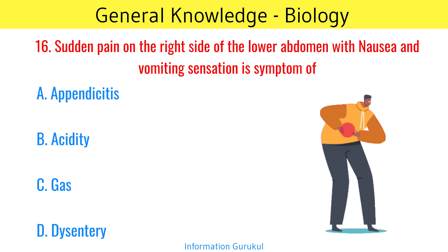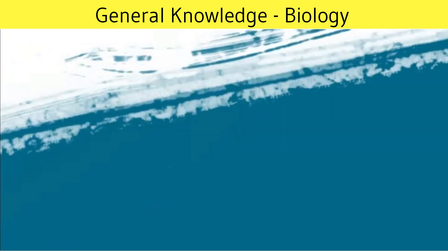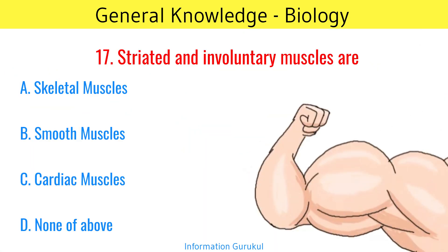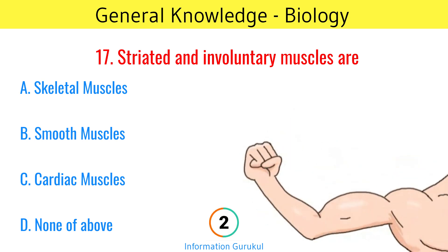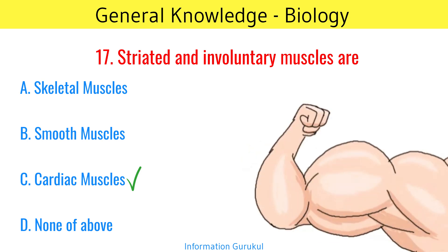Sudden pain on the right side of the lower abdomen with nausea and vomiting sensation is a symptom of appendicitis. Striated and involuntary muscles are cardiac muscles.